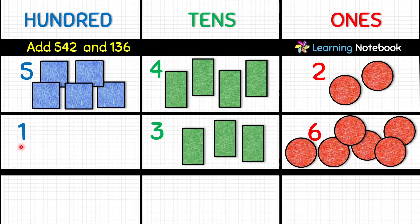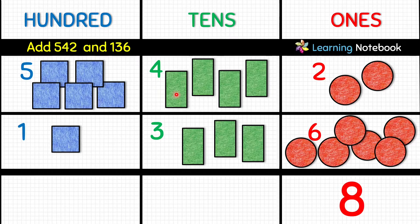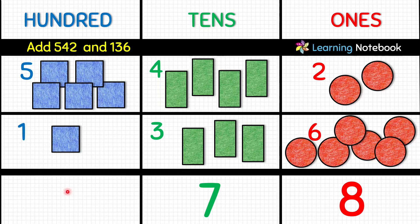For 1 hundred, let's put 1 blue square. Now first add the ones place — count the red circles: 1, 2, 3, 4, 5, 6, 7, 8. Let's write 8 here. Then add the tens place — count the green rectangles: 1, 2, 3, 4, 5, 6, 7. Write 7. Then add the hundreds place — count the blue squares: 1, 2, 3, 4, 5, 6. Write 6. Our answer is 678.